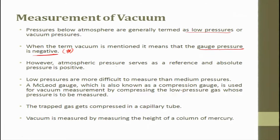Atmospheric pressure serves as a reference and absolute pressure is positive. Low pressures are more difficult to measure than medium pressure. Anything which is higher in pressure is easy; if you want to go below atmospheric pressure, anything lower than that is always difficult.